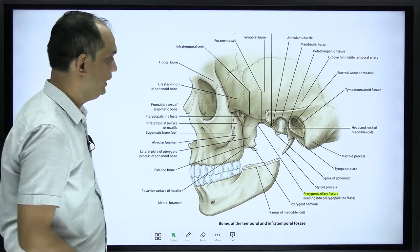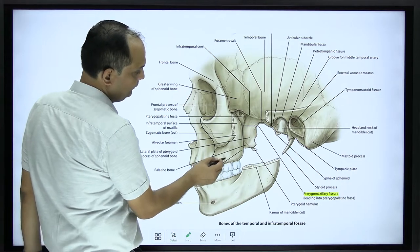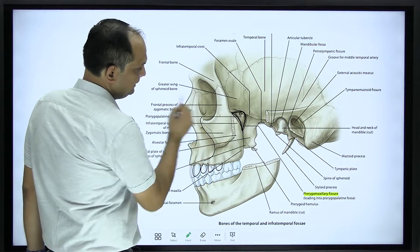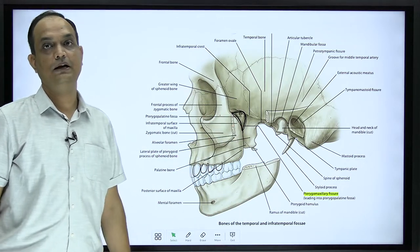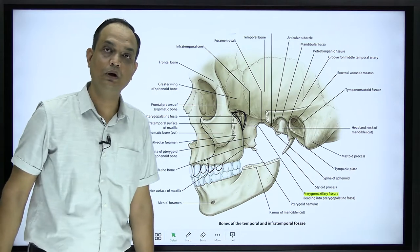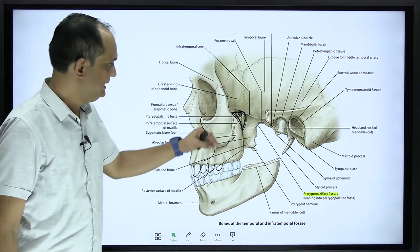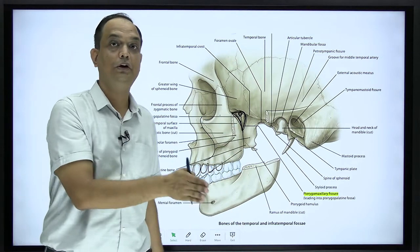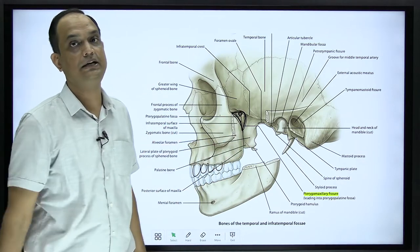Here you can see the exact location. This is your maxilla with the maxillary teeth, and behind this maxilla you have this portion — this is your pterygopalatine fossa, which is medially closed by the perpendicular plate of the palatine bone. In this plate there is a small foramen known as the sphenopalatine foramen. The pterygopalatine fossa has a gate or door on its lateral wall, and that door is known as the pterygomaxillary fissure, through which the artery enters into the fossa.